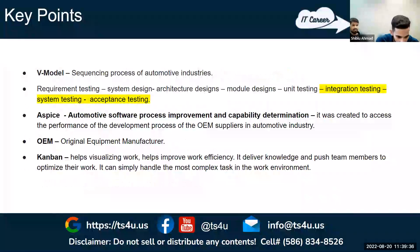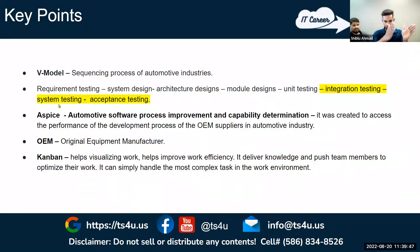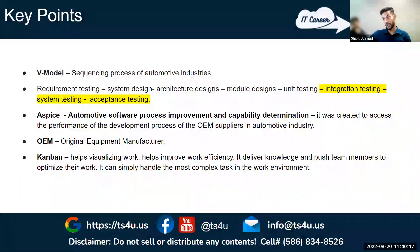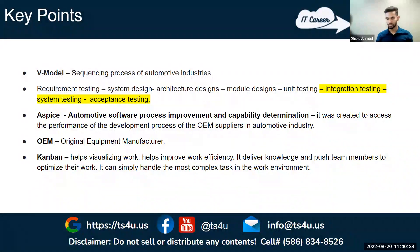The V-model is a sequential process used in the automotive industry. The stages include equipment testing, system testing, system design, architecture design, module design, unit testing, integration testing, system testing, and acceptance testing. The three stages — integration, system, and acceptance testing — are only done by the actual OEM company, like GM building a vehicle.